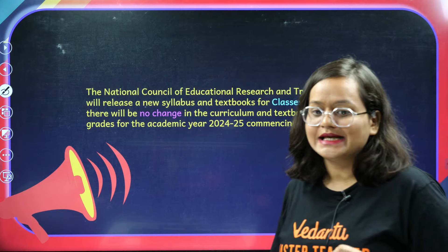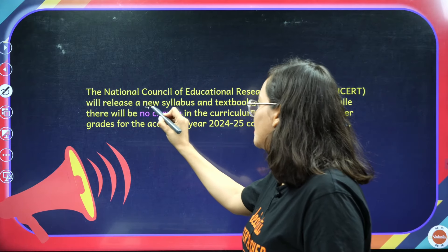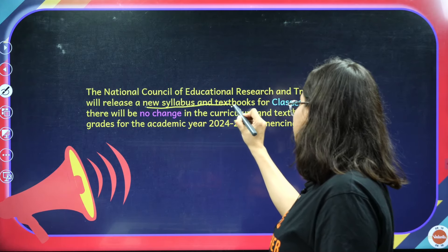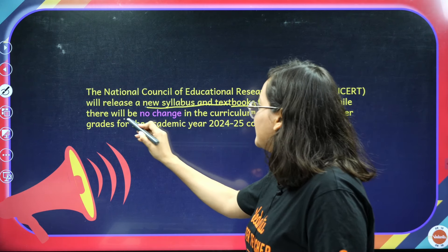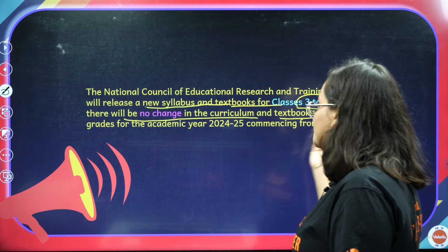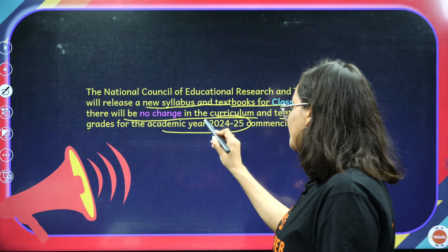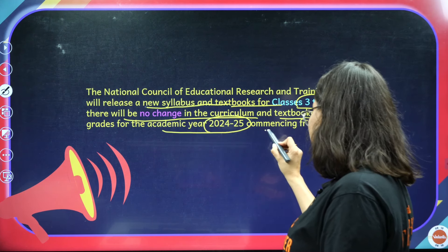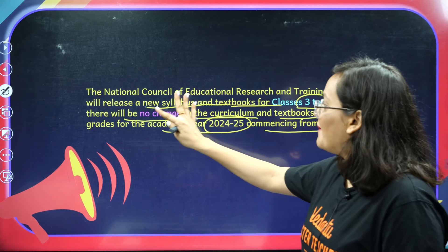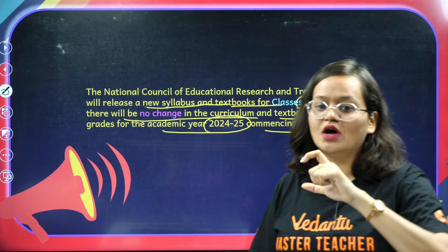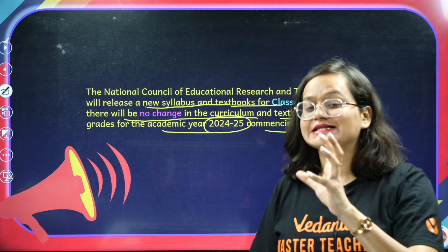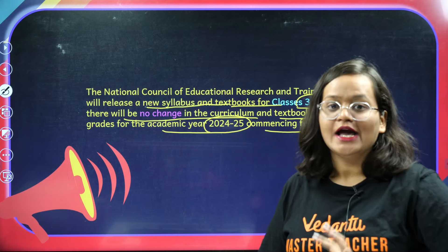Let's start today's session. NCERT will release a new syllabus and textbook for class 3 to 6. There is no change in the curriculum and textbooks for other grades for the academic year 2024-25 commencing from April 1. So NCERT has basically made some changes for class 3 to 6, but for all other classes there is no change.